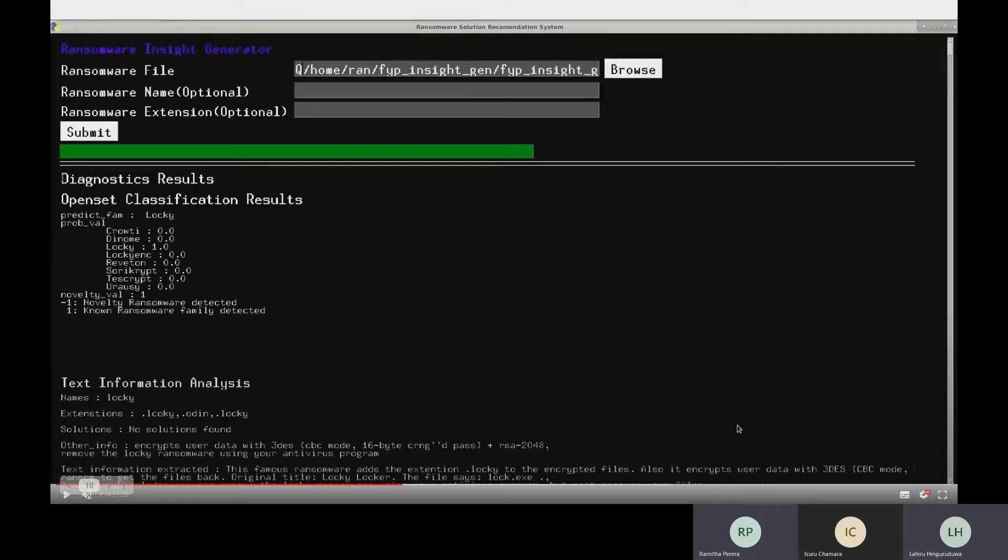If the ransomware is not recognized into such families, then our novelty detection system would mark it as a new ransomware family variant.